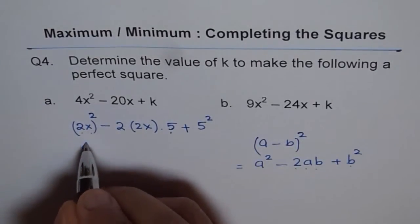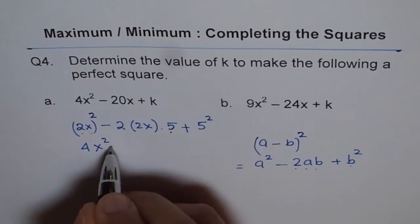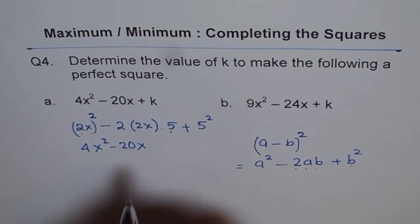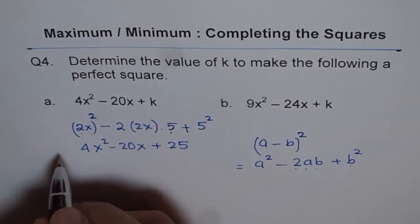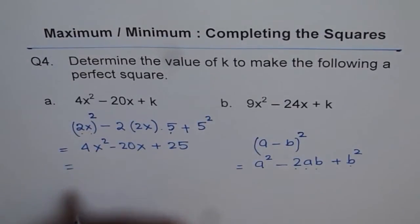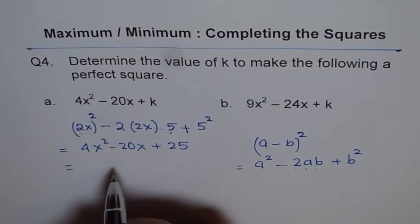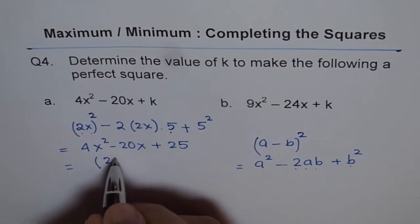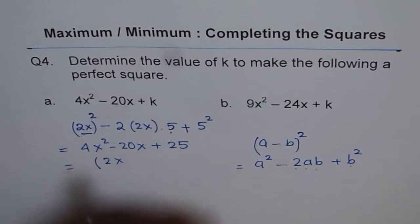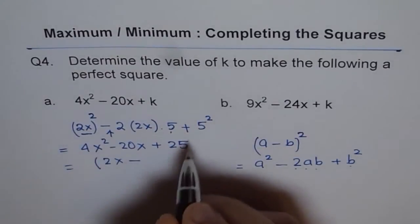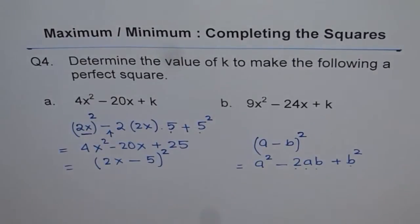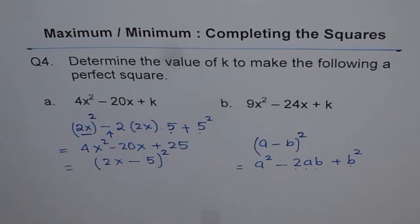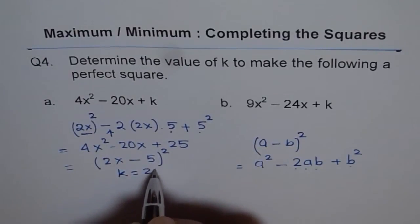Therefore I can write this as 4x² - 20x + 25. And you can always check it. It should be a perfect square of the kind (2x - 5)², which is A minus B. So that is how we get the value of k. And we say well k equals 25.